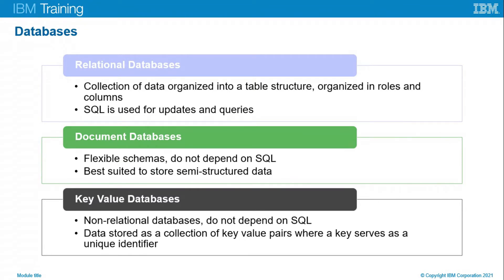Firstly, relational databases are a collection of data organized into table structures with rows and columns, based on SQL for updates and queries. They are very good for asset compliance and high transaction applications such as online data processing. Next, document databases have flexible schemas, do not depend on SQL, and are more suited for storing semi-structured data. Common use cases include customer data, user-generated content, and order data.